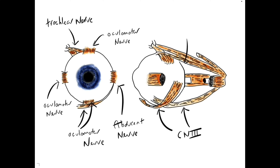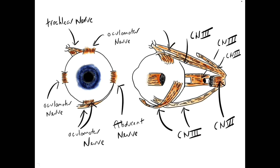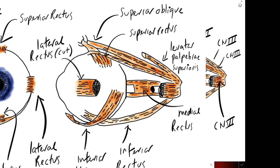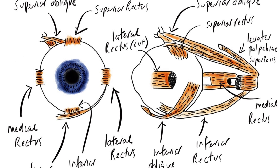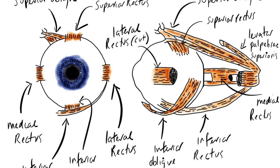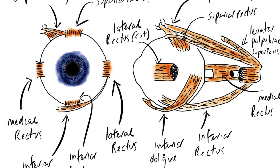The oculomotor nerve can be seen quite easily in the orbit. The trochlear nerve innervates the superior oblique muscle on its superior edge, and the abducens nerve innervates the lateral rectus muscle on its medial surface — and that's the best place to look for it.